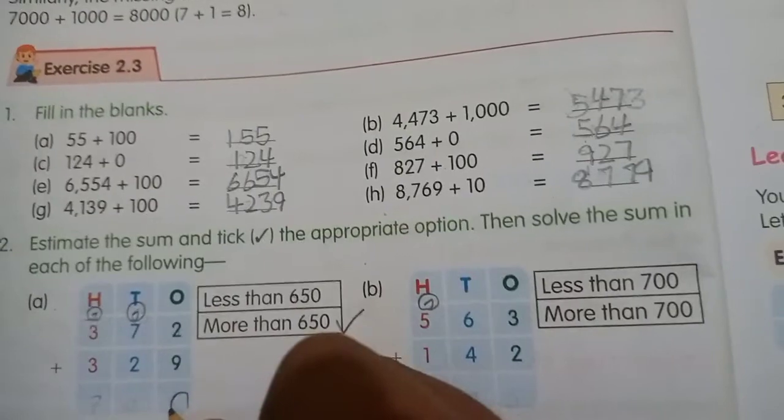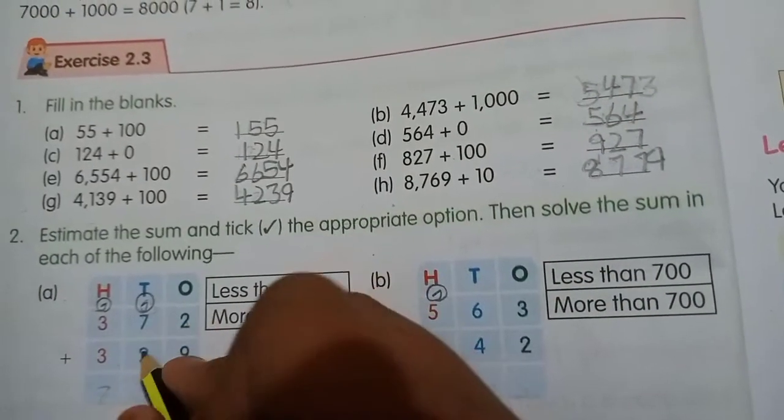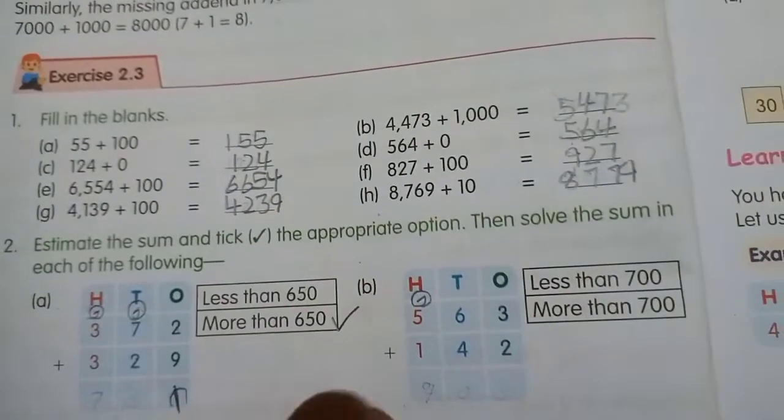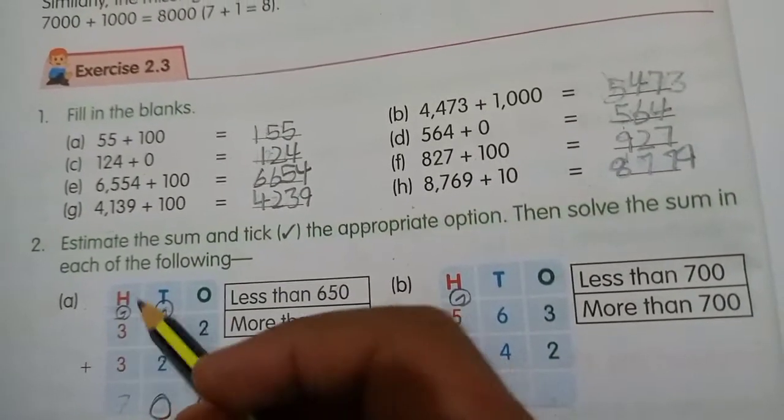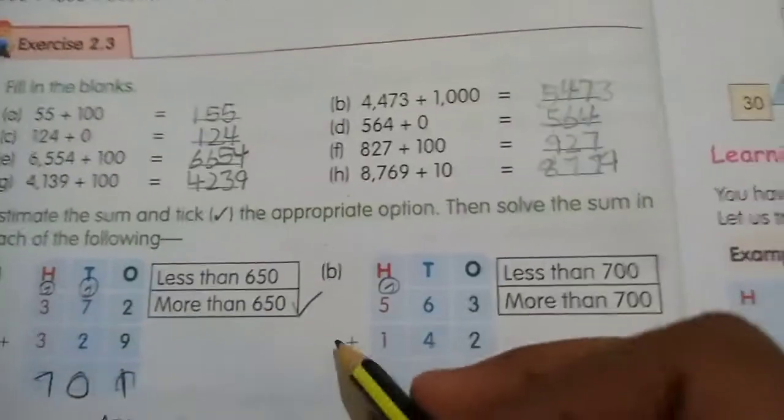...left hand, 1 carry 11. 7 and 2, then the sum is 9, and 9 plus 1 is left hand 10. And these are right hand, this is 3, and 3 and 1 is left hand 701. So 650 se zyada hi aaya hai.